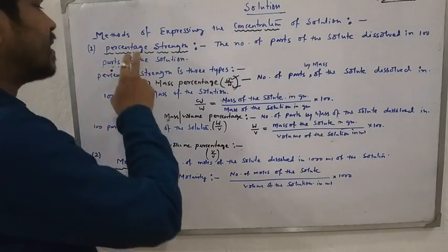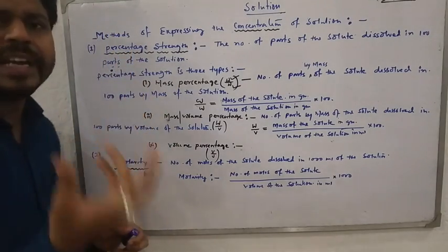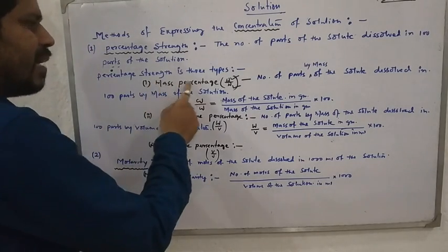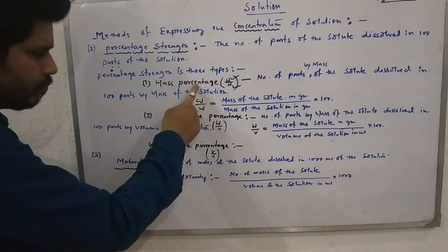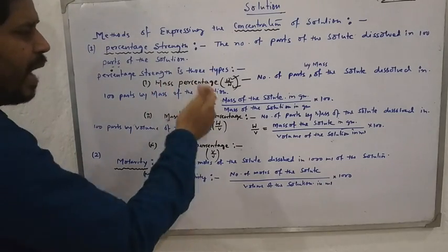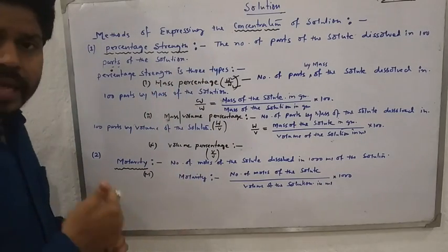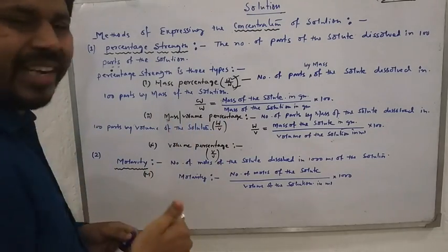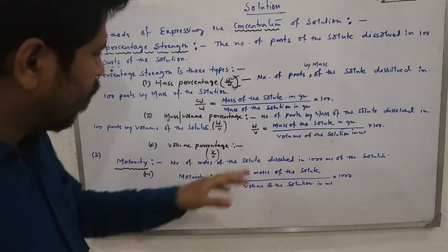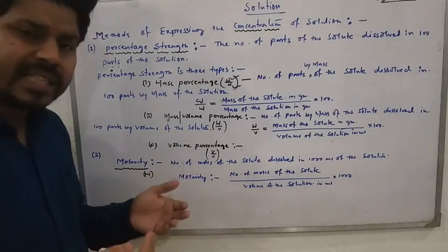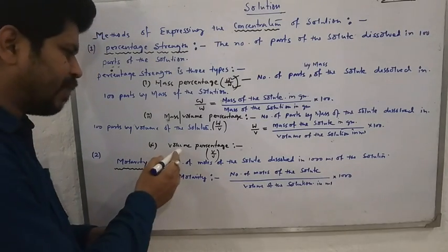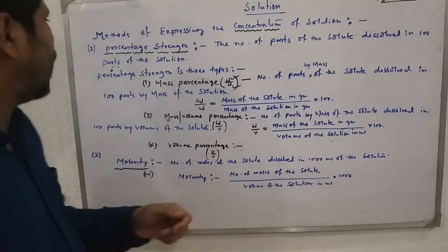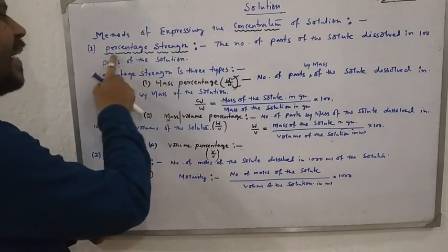Percentage strength is of three types. First, mass percentage, denoted by W/W. Next, mass by volume percentage, denoted by W/V. And the last is volume percentage, denoted by V/V. So these are the three types of percentage strength.